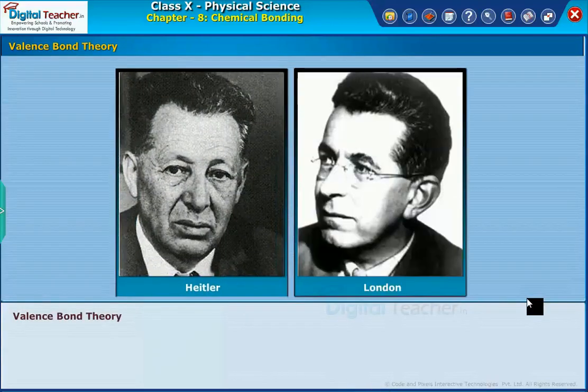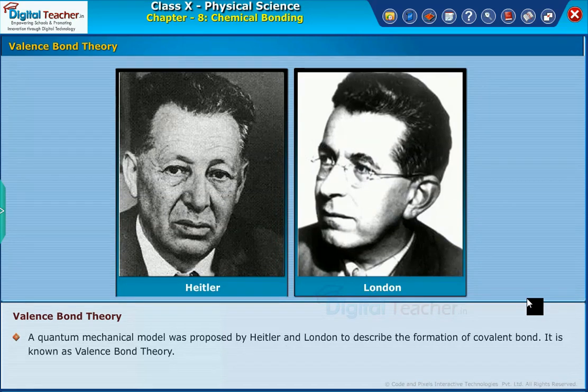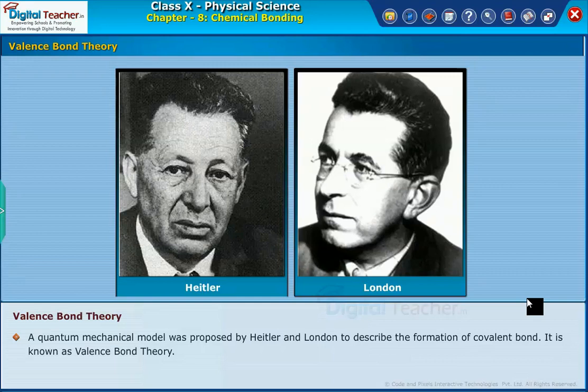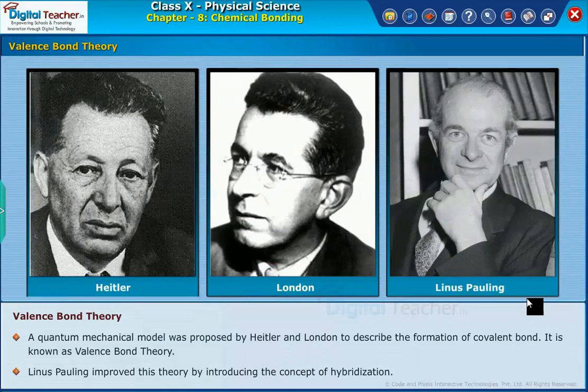Valence bond theory. A quantum mechanical model was proposed by Heitler and London to describe the formation of covalent bonds. It is known as valence bond theory. Linus Pauling improved this theory by introducing the concept of hybridization.